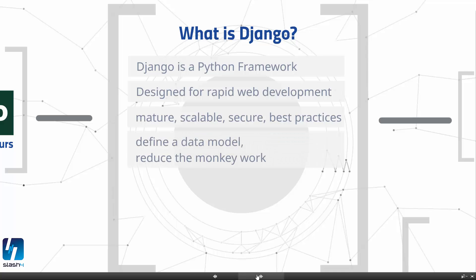In Django you just define a data model, and from this model most of the work is automated, so you can really reduce the monkey work that has to be done. You can write better apps with less code.